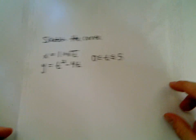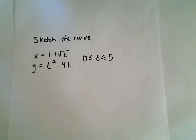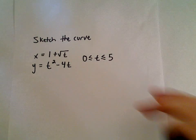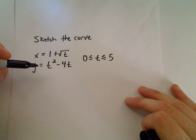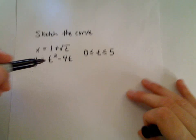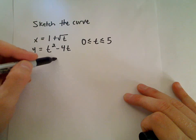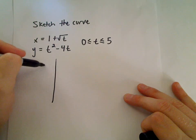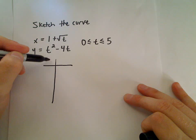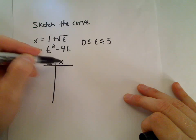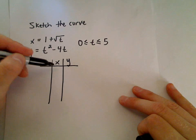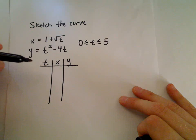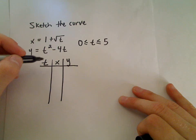Suppose we want to graph the parametric curve x equals one plus square root of t, y equals t squared minus four t, and t is between zero and five. Just like when you normally make a t-chart, that's what we're going to do here. Instead of making x and y directly, we'll pick a value for t and then we'll be able to calculate both x and y.